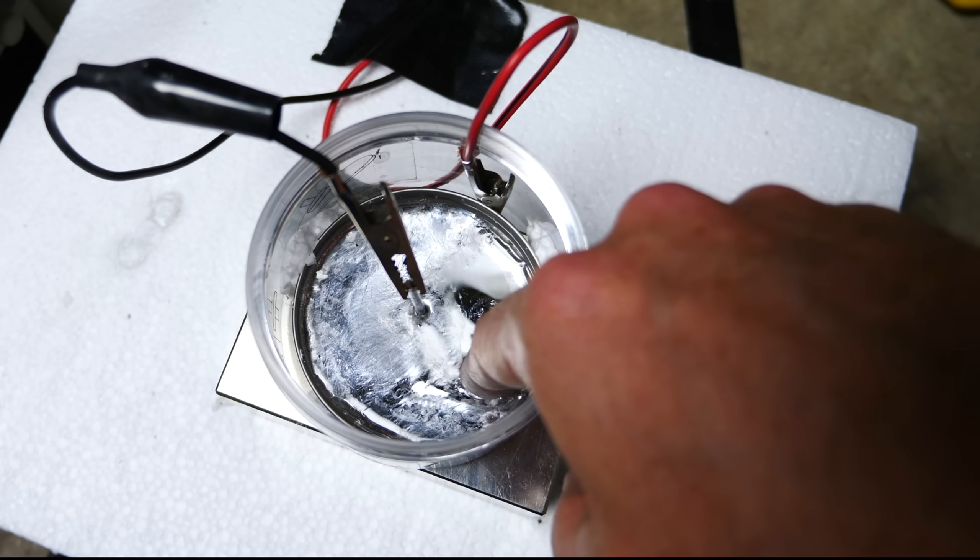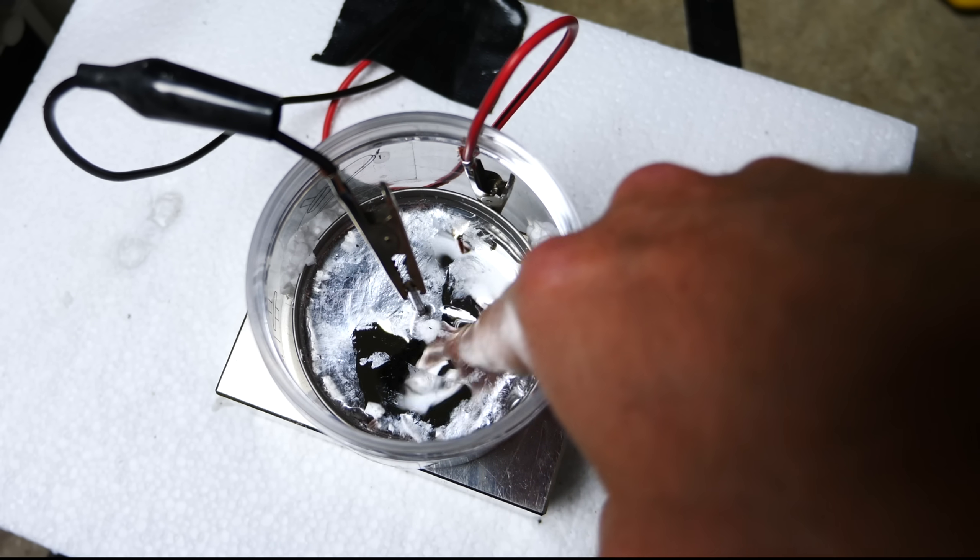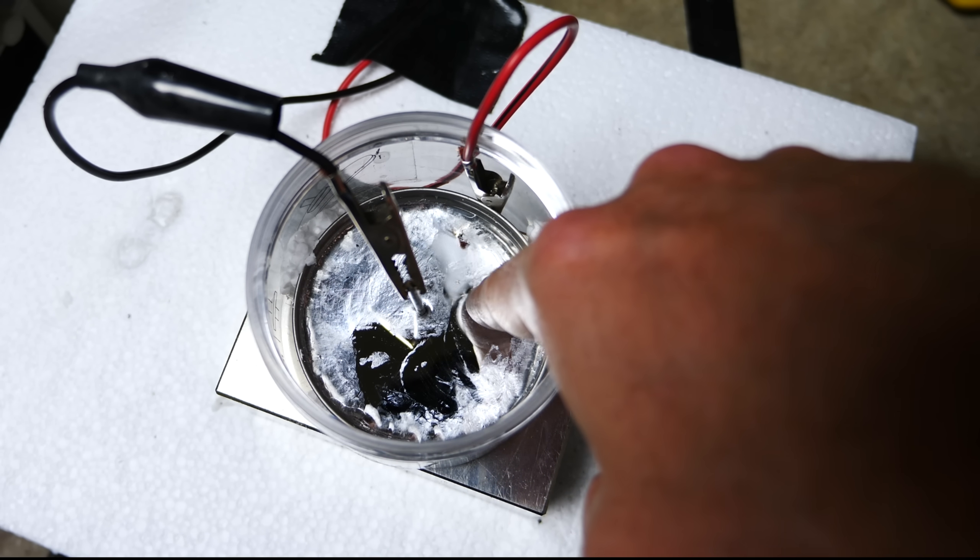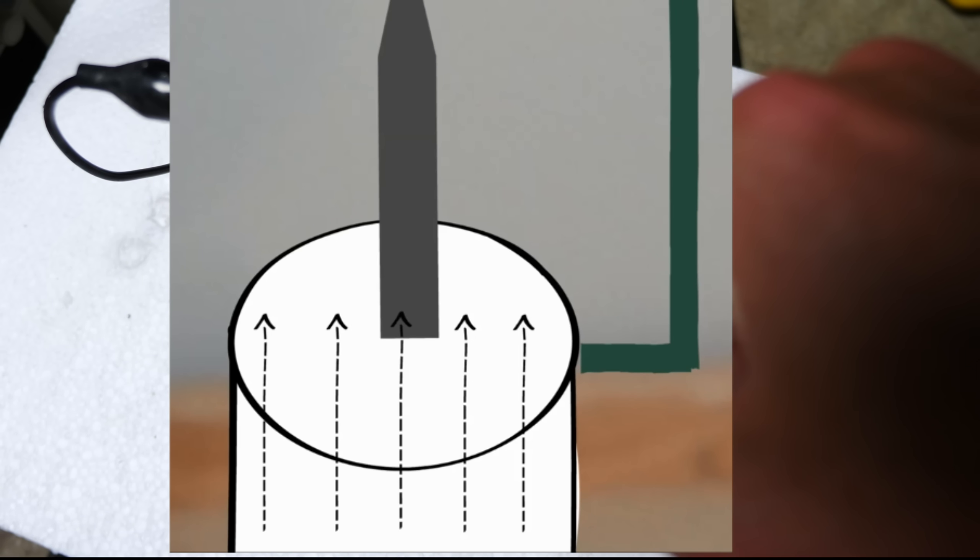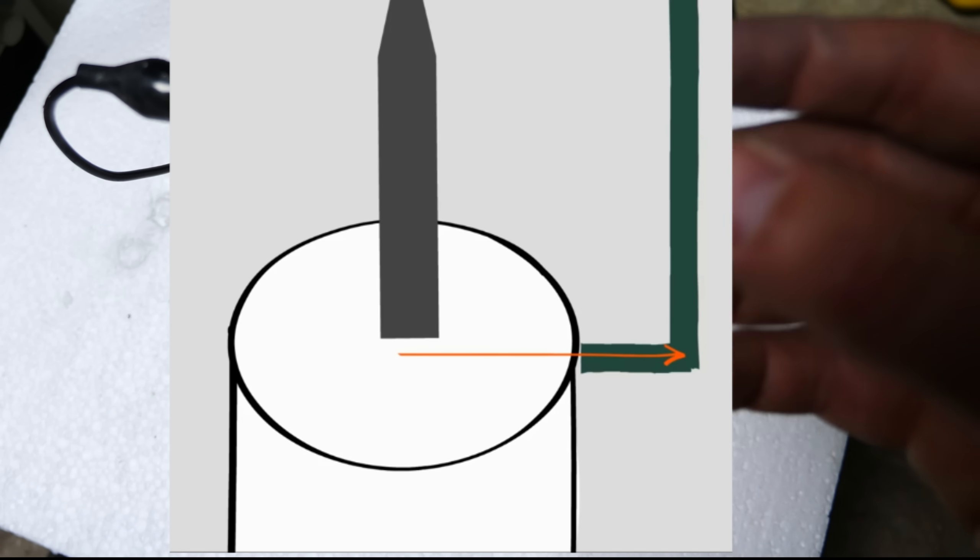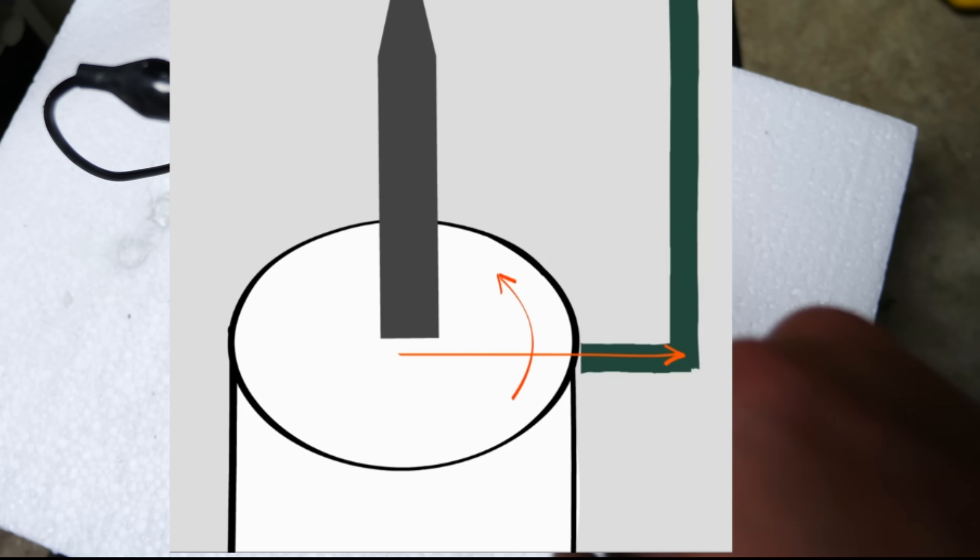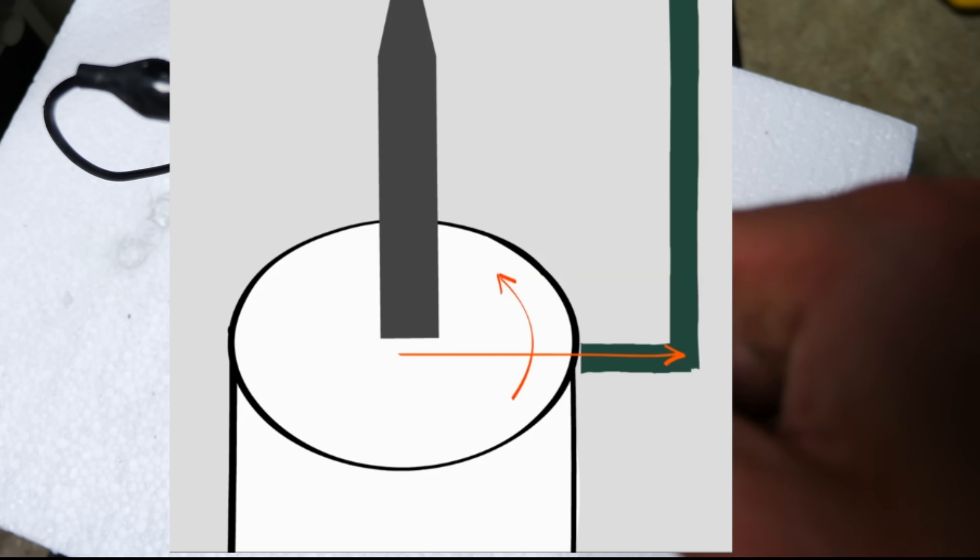But because we don't have a normal conductor here, we actually have a liquid conductor. What can happen is instead of the electrons getting pushed, the electrons are going to push the actual material that they're part of. So they're going to push the atoms of gallium instead of the electrons themselves being pushed.